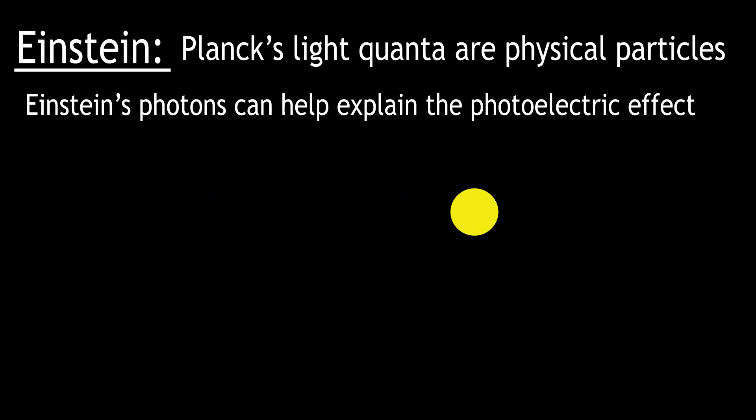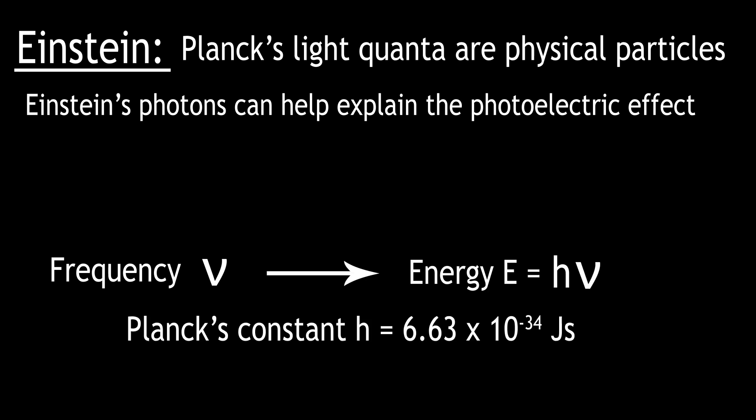Einstein, however, was able to account for these observations. He postulated that Planck's light quanta were physical particles. Instead of thinking of light as a wave, it could be considered something akin to an electron or a proton. But most importantly, for a given frequency nu, a photon would have a well-defined energy h nu.